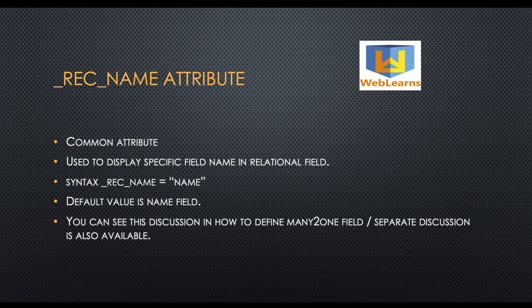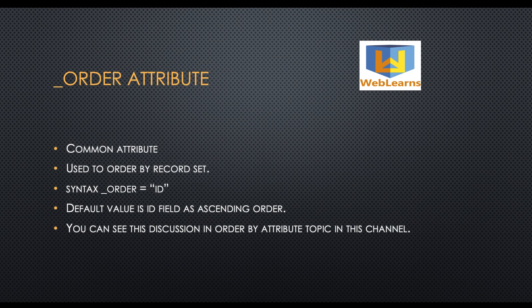The underscore order attribute is commonly used when you want to change the ordering of a record set. For example, if you want to see the latest records in tree view or in a search method, you can use this attribute. By default it orders by ID in ascending order. We will see a real test case after this discussion.